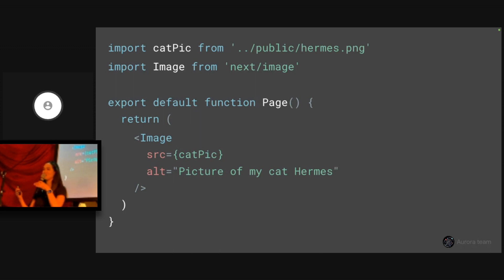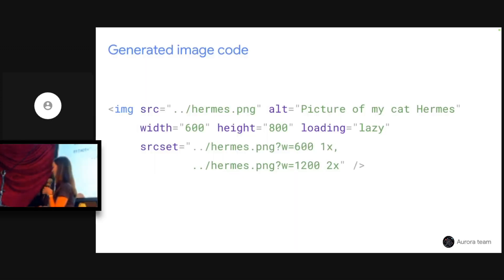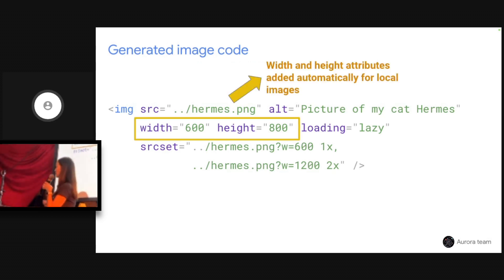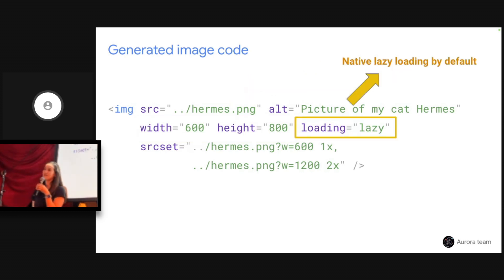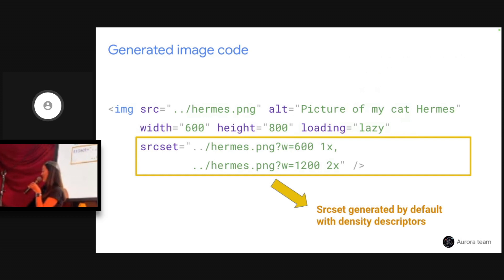What does that look like under the hood? Already this generates a lot more than we actually wrote. Width and height attributes are generated automatically — for local images, Next.js can extract the dimensions at build time and add them to your template. We also have native lazy loading by default, since we expect most images won't be critical and we don't want them to compete with your LCP resource. We also generate a sensible density source set, capped at 2x to avoid requesting super large images on mobile.